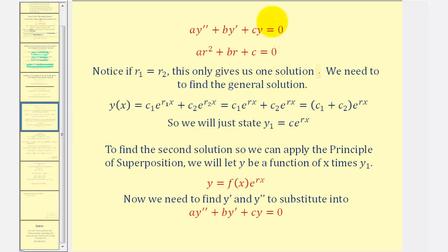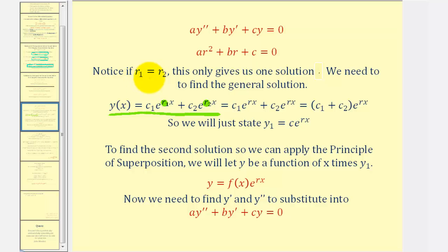So to begin, if our differential equation fits this form here, we can set up this characteristic equation and solve for r. And if we have two distinct real roots, we know from the last lesson the general solution will be in this form here, where the solutions are r₁ and r₂. This came from applying the principle of superposition, where we found two solutions. But if r₁ equals r₂, this only gives us one solution, since c₁ plus c₂ is just another constant.